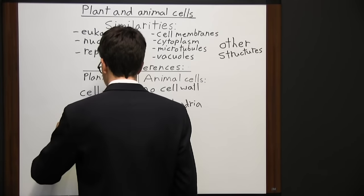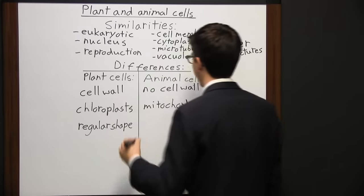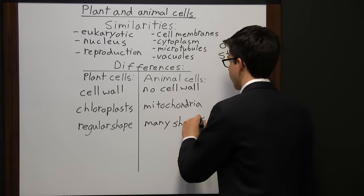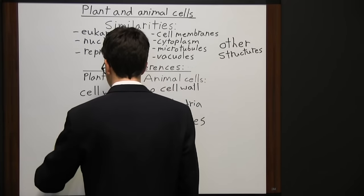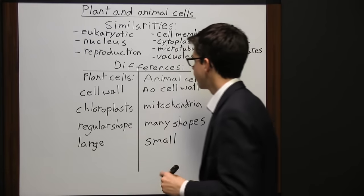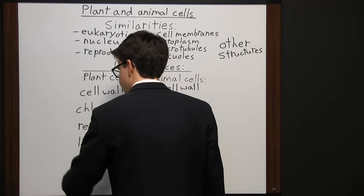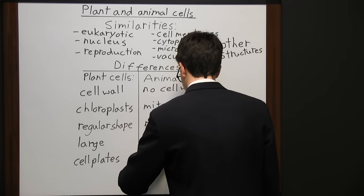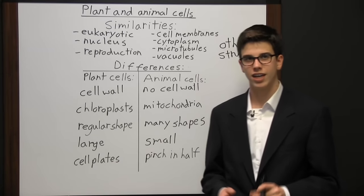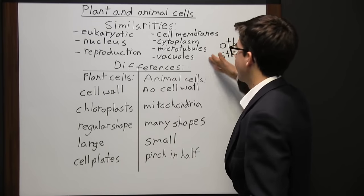There's also a difference in size: plant cells are generally larger than animal cells. Finally, plant cells have cell plates — two new cells are separated by cell plates, while animal cells pinch in half. Plant cells build a cell plate between two new cells, while animal cells make a cleavage furrow and pinch in half. Those are many of the main differences and similarities between the two cell types.